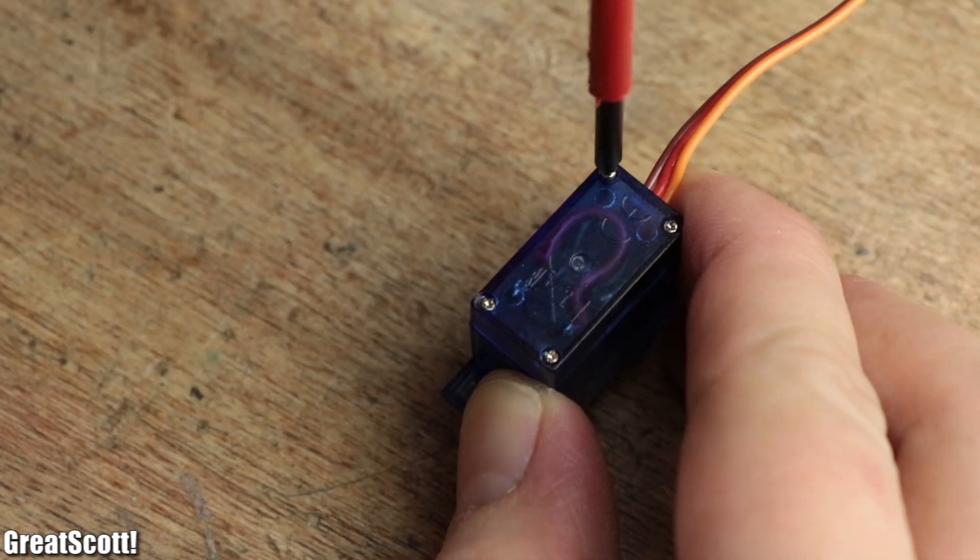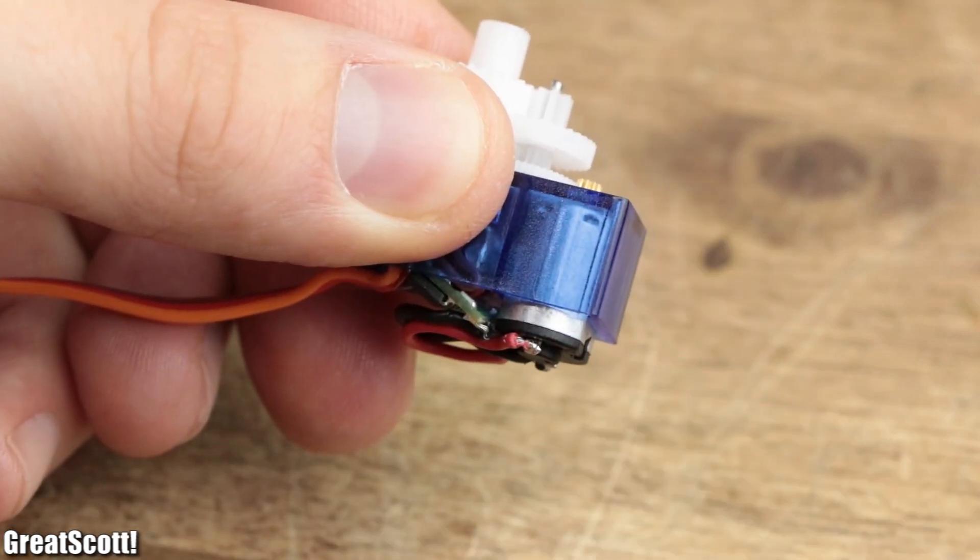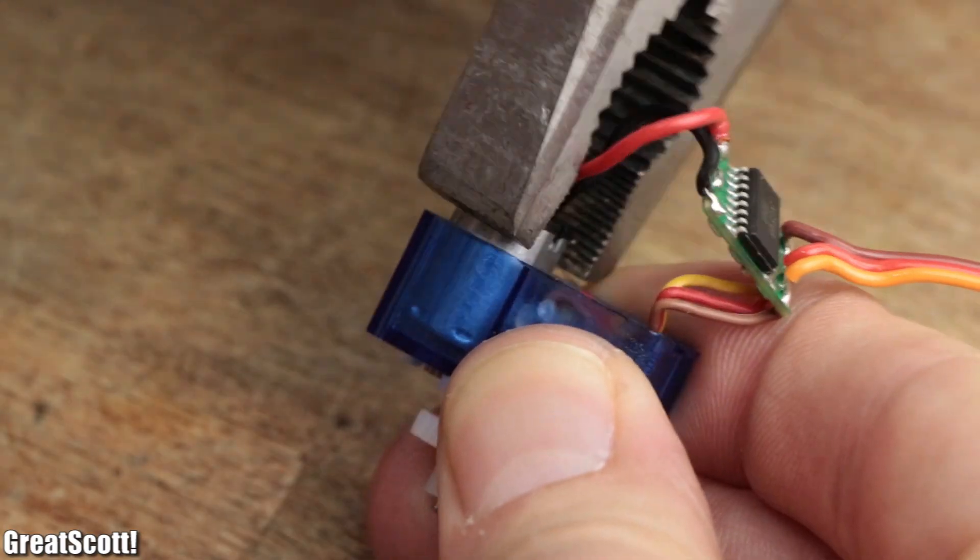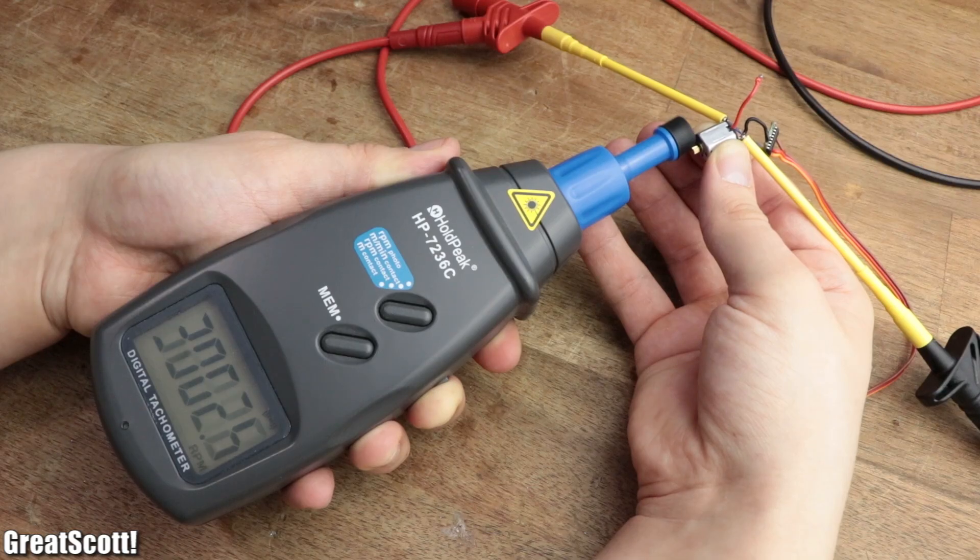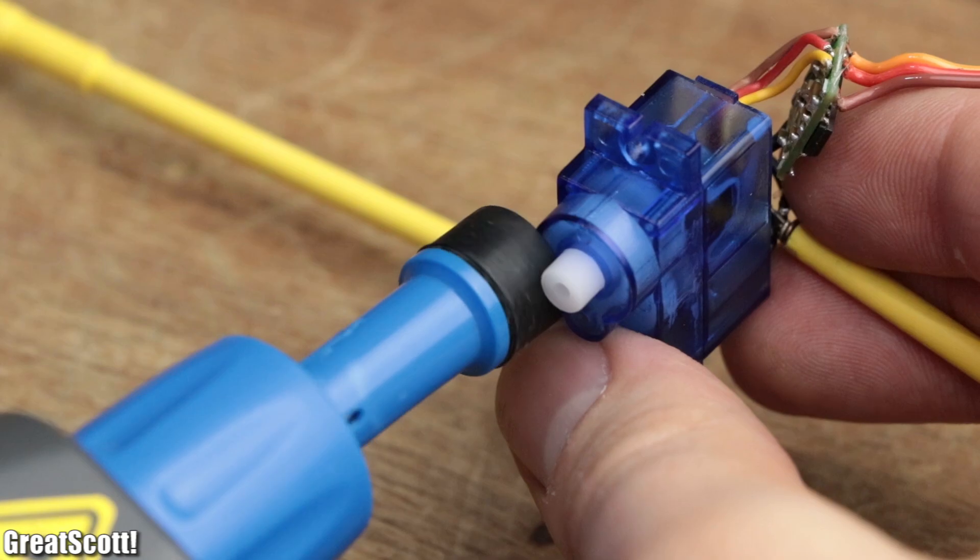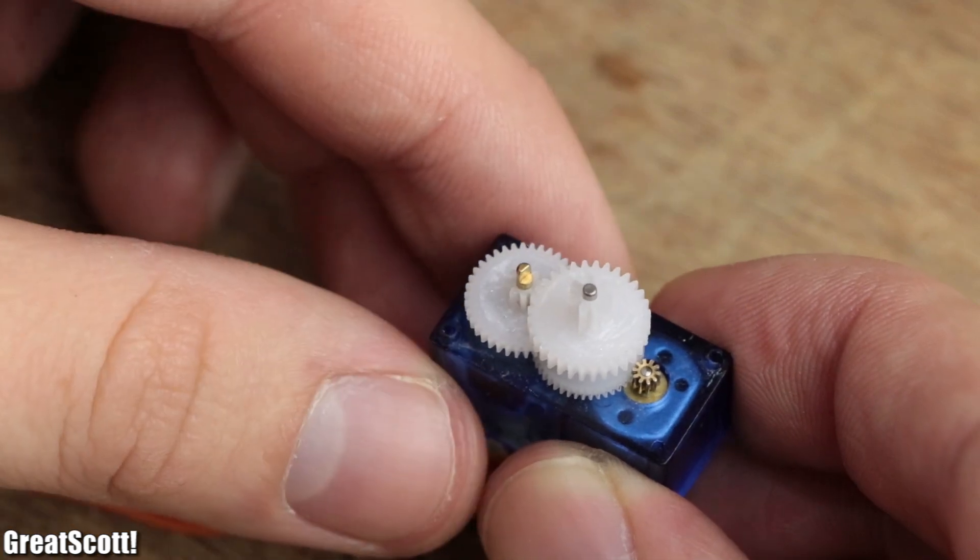But before applying an appropriate signal, let's remove the four mounting screws of the servo in order to remove the top and bottom cover. On the top we can see four different sized gears that decrease the original RPM of the utilized DC motor from around 3000 to around 50 to 100 RPM, and thereby also increase the torque.